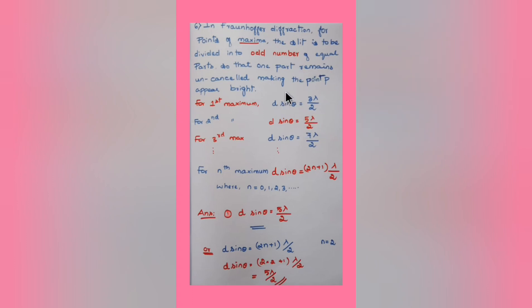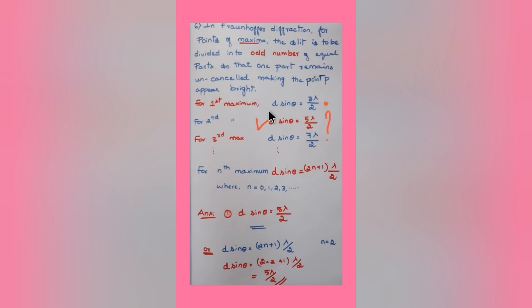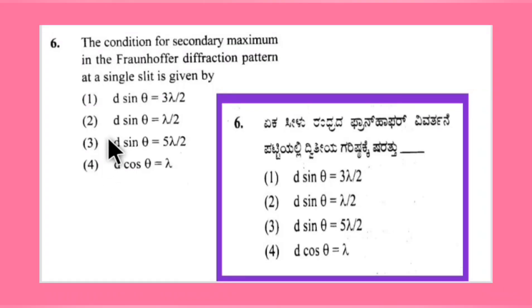For the first maximum, substituting n=1: d sinθ = 3λ/2. For the second maximum, substituting n=2: d sinθ = 5λ/2. So the right answer is option number 3, d sinθ = 5λ/2, for this question.